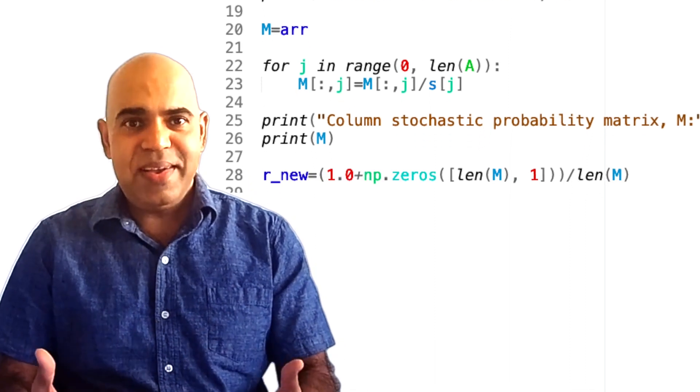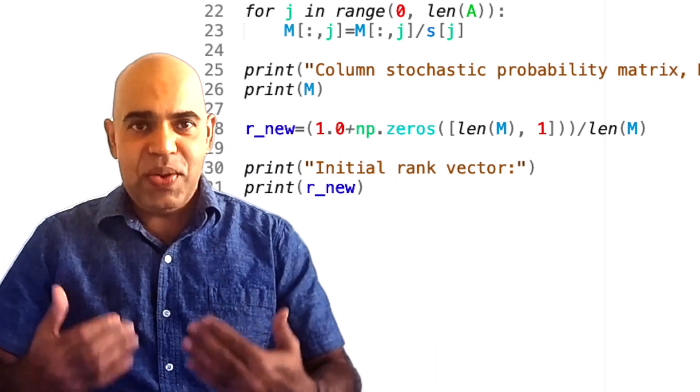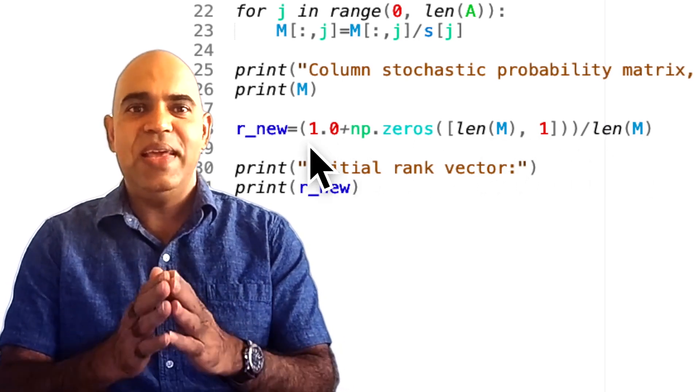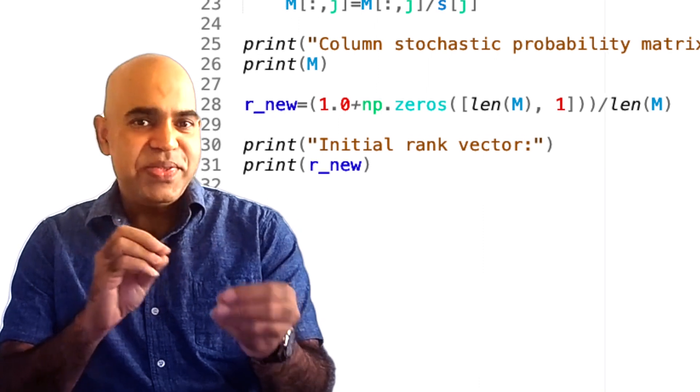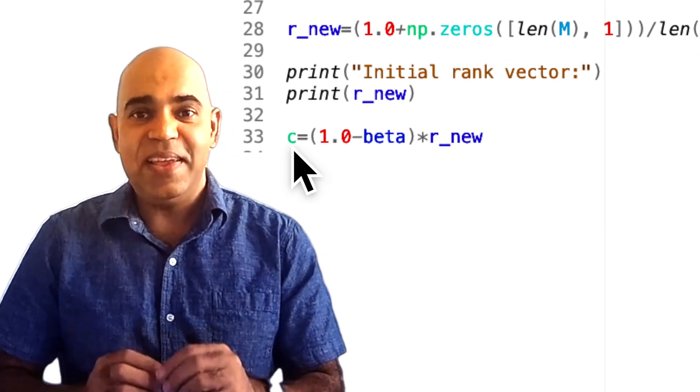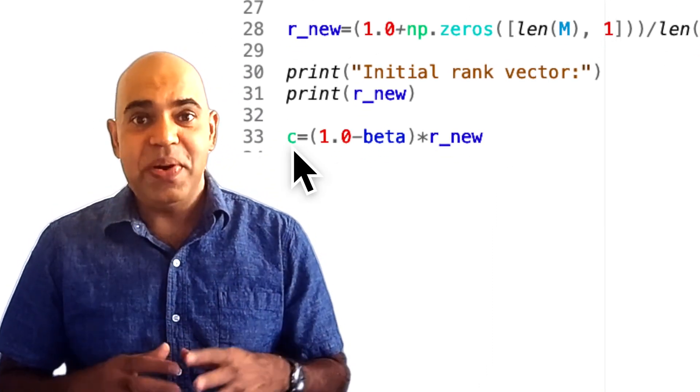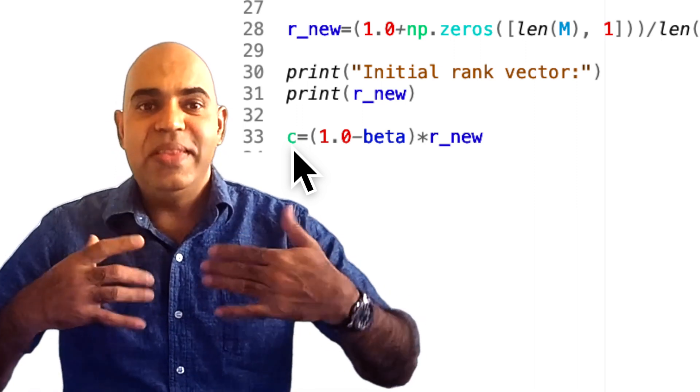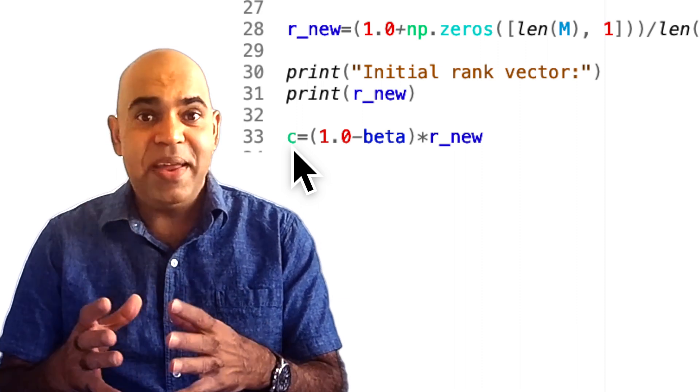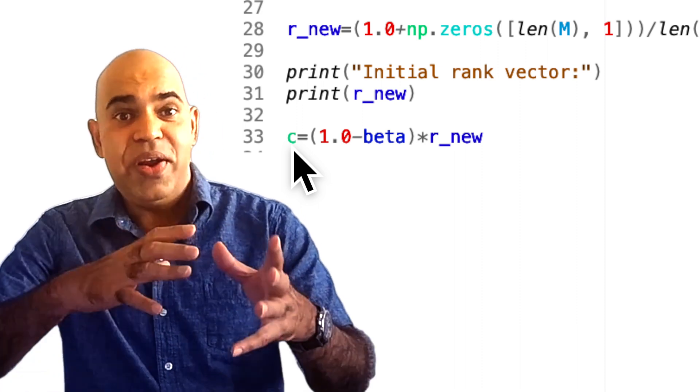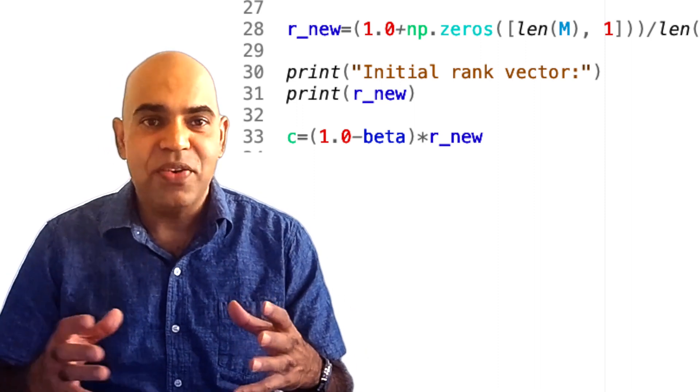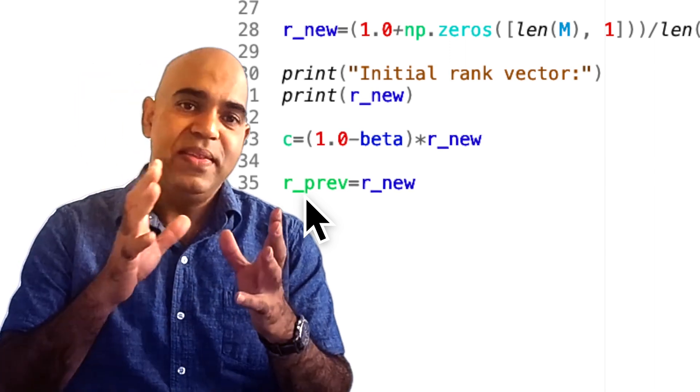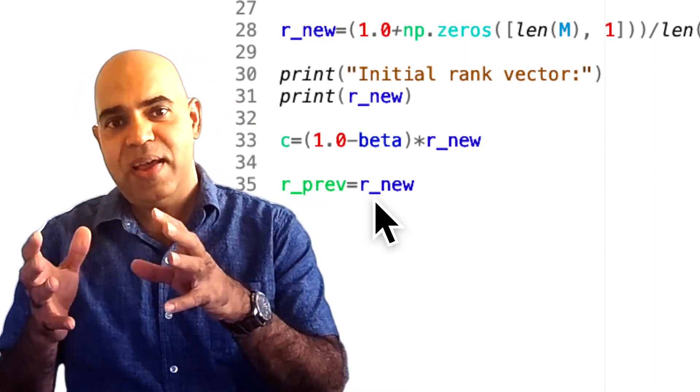We initialize our rank vector r_new to be a uniform distribution. Each web page is initially assigned an equal rank. We also define a vector C which accounts for the teleportation part of the random surfer model. We discussed in the previous video how this vector C would remain a constant vector for a given internet with a specific damping factor beta. The rank vector r_prev is then initialized with the same value as r_new.